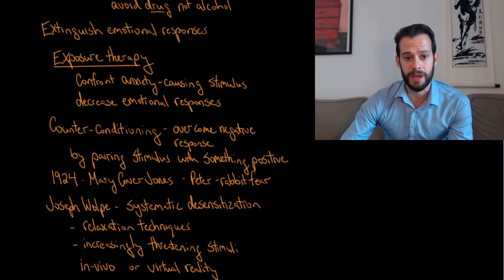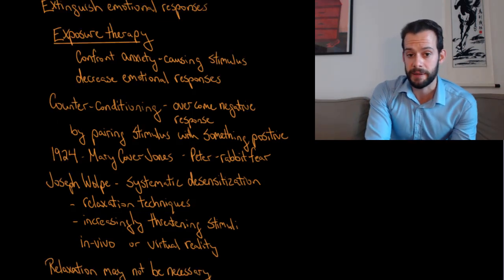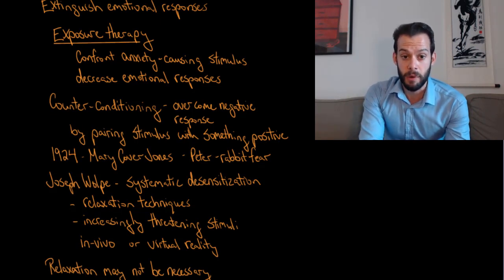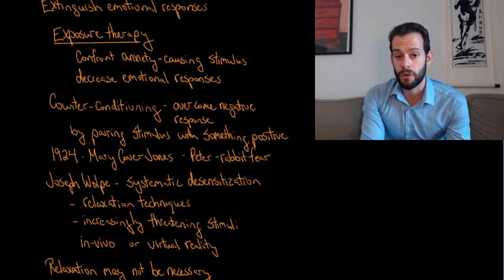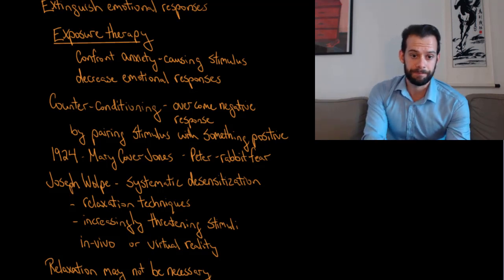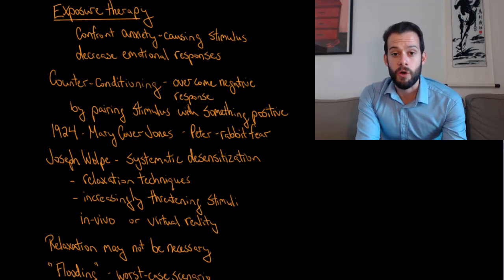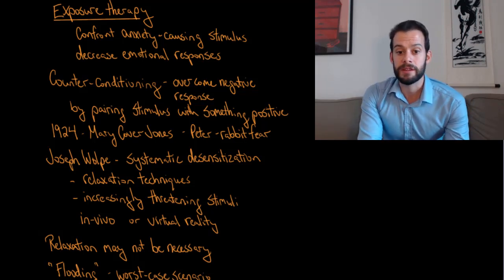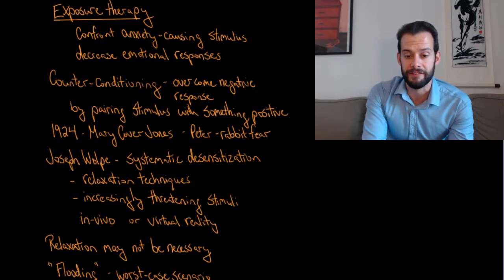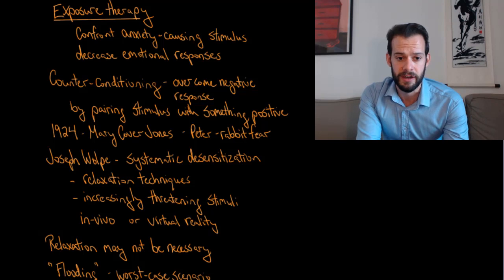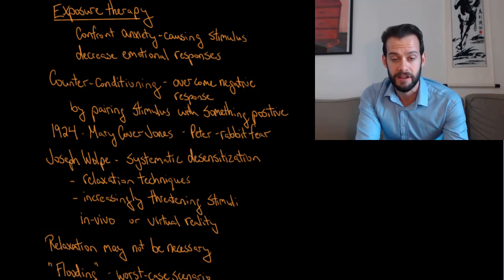Aversion therapy sees more success when used to extinguish emotional responses, particularly through exposure therapy for treating specific phobias. In exposure therapy, the person confronts some anxiety-causing stimulus and learns to decrease their emotional responses, hopefully extinguishing those emotional responses to certain stimuli. This is described as counter conditioning — replacing negative associations with more positive associations. This was described in 1924 by Mary Cover Jones, who helped a boy named Peter overcome a fear of rabbits using counter conditioning.